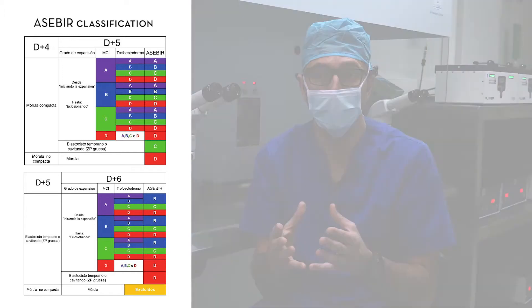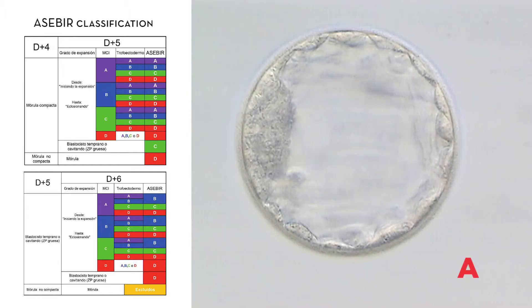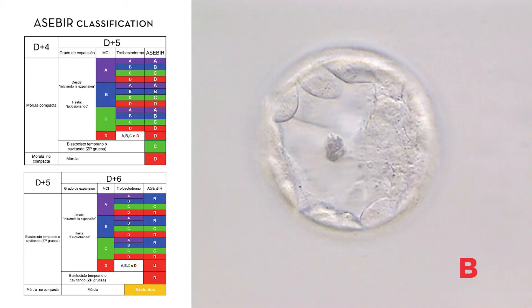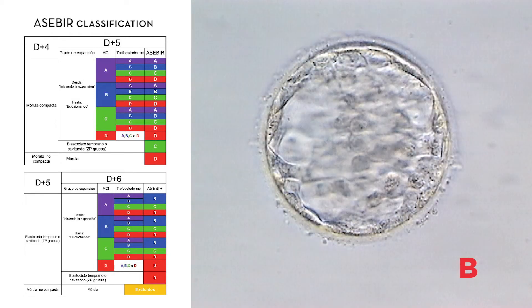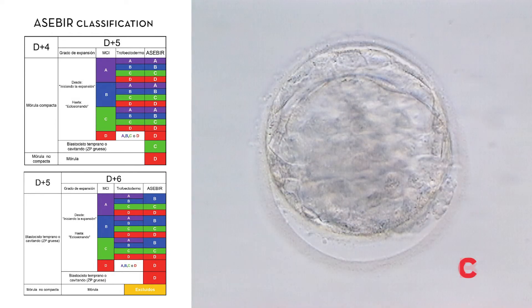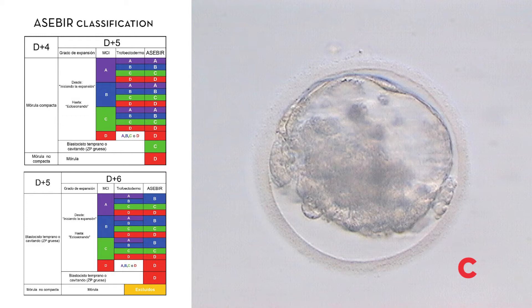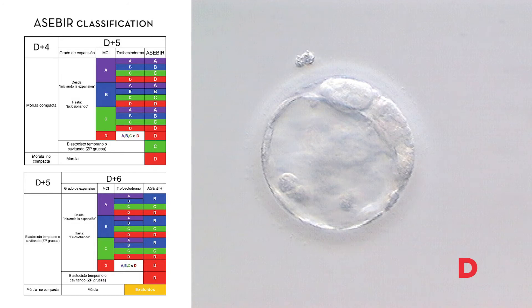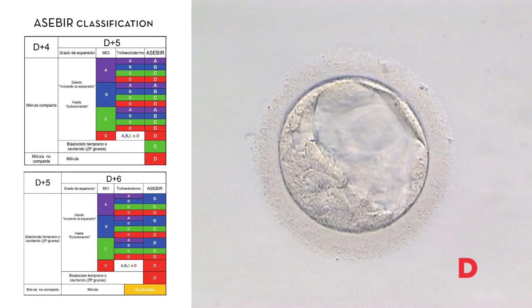Blastocysts assigned a category A classification are optimum quality blastocysts with the greatest ability to implant. Category B blastocysts are good quality with an elevated ability to implant. Category C refers to blastocysts with an average quality level and average ability to implant, whilst Category D blastocysts are poor quality and unlikely to lead to gestation.